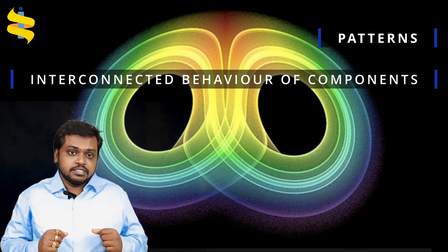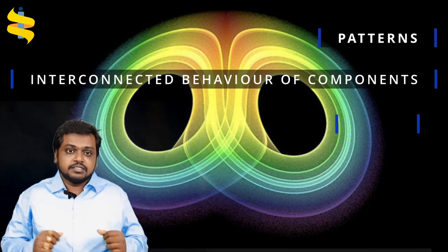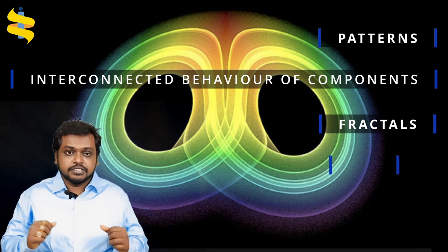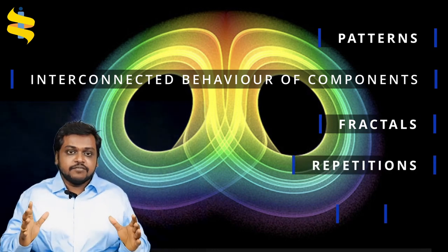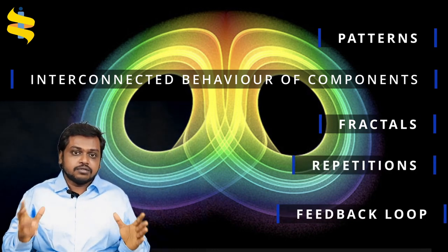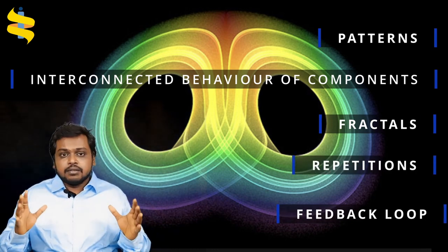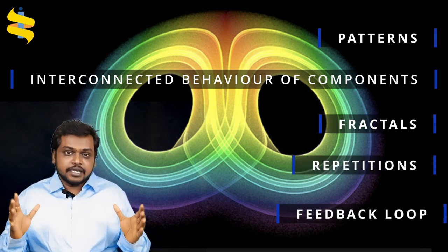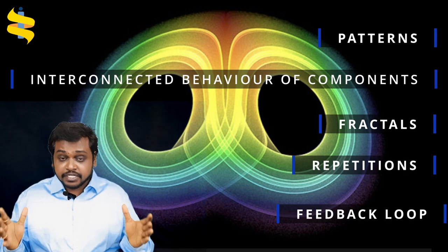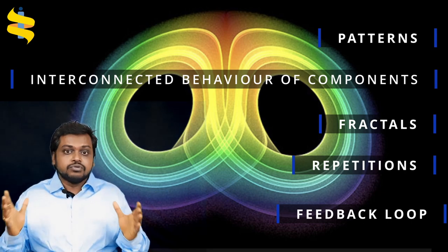So what defines a chaotic situation? Patterns, interconnected behavior of components, fractals, repetitions, and finally feedback loops. There are a lot of terms mentioned here. It is very difficult to understand them in isolation, but if I give you an easy-to-understand example, you can grasp all these components clearly.